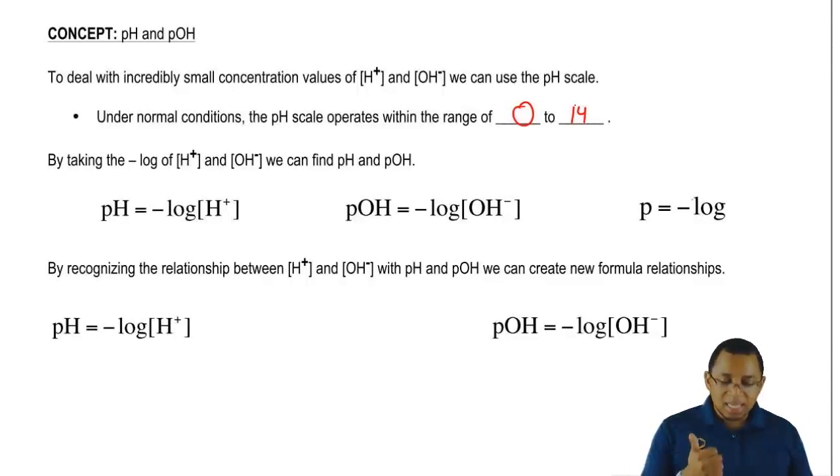By taking the negative log of H positive and OH minus, we can find pH and pOH.